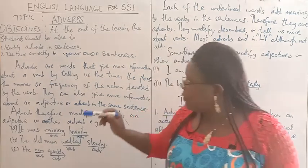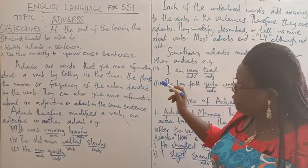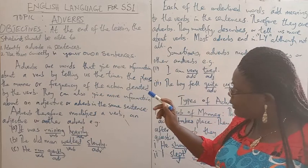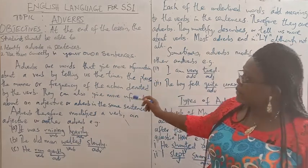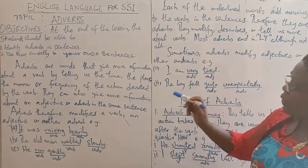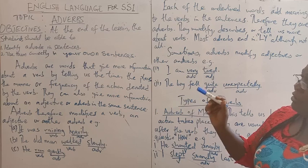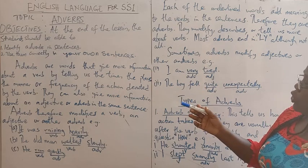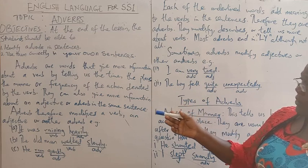What then are adverbs? Adverbs are those words that give more information about a verb by telling us the time, the place, the manner, or frequency of the action denoted by the verb. They can also give more information about adjectives.